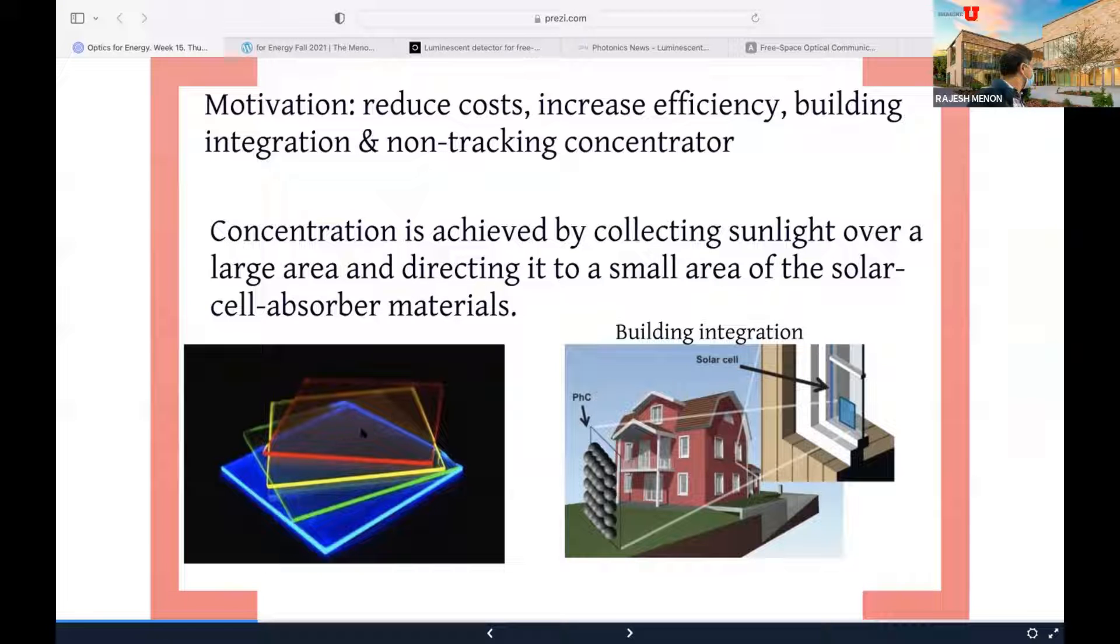And the really cool thing is that you can change the color. So you can make it red, yellow, green, blue, whatever, by changing the materials that absorb and emit the fluorescence. And as you can see, they look like windows, so they can be embedded into buildings and so on as part of the windows. And it's fully transparent. So you can see through, but it absorbs a portion of the light, which is then redirected to the edges and is collected by solar cells. So very, very cool, interesting, simple idea.